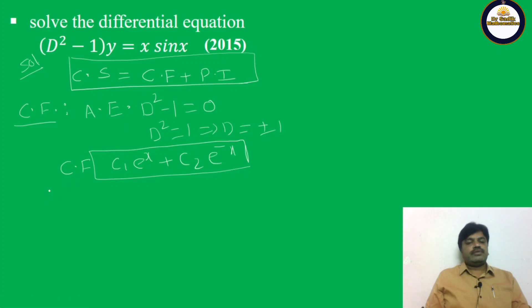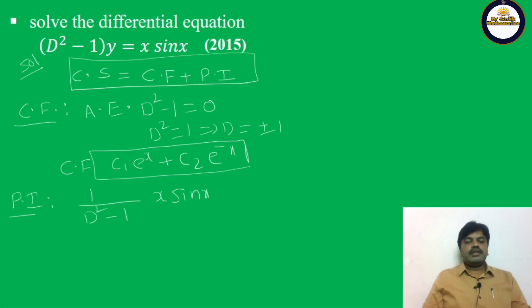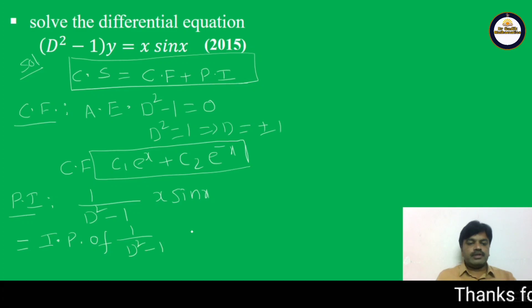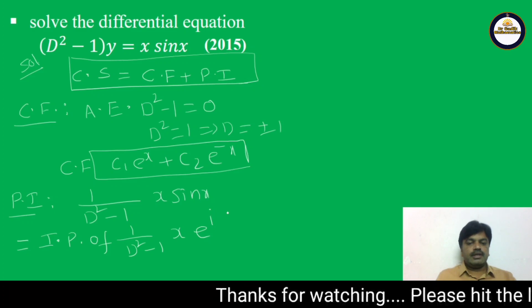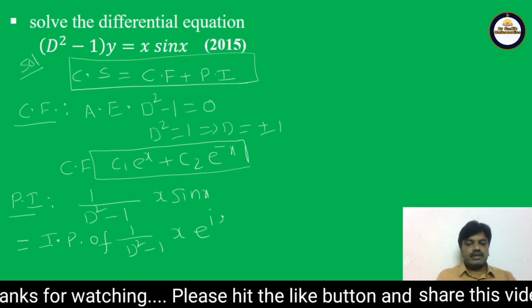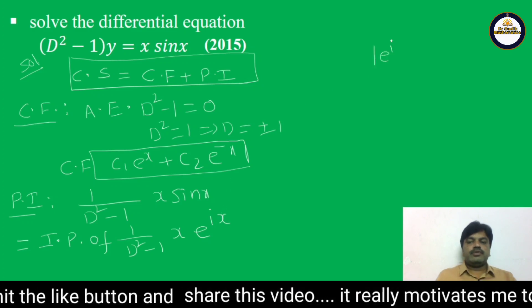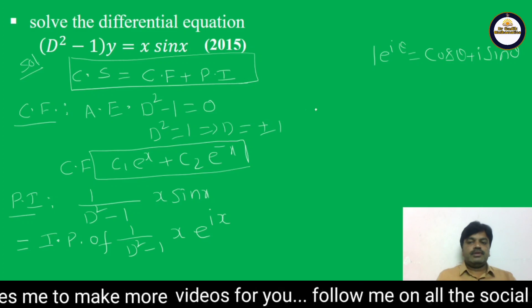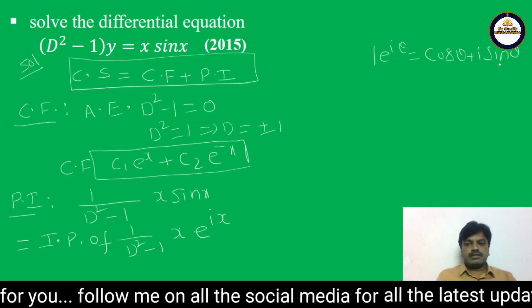Now for the particular integral: PI = (1/(D²-1)) · x·sinx. Since we have x·sinx with sin(x), we write it as the imaginary part of (1/(D²-1)) · x · e^(ix), because e^(iθ) = cosθ + i·sinθ and the imaginary part is sin(x).